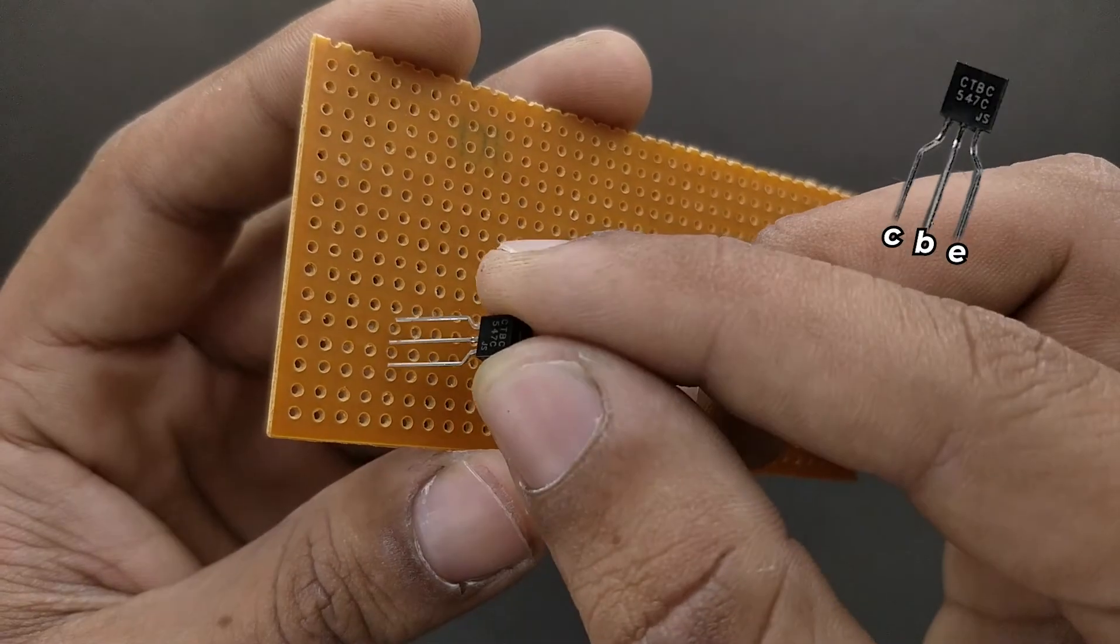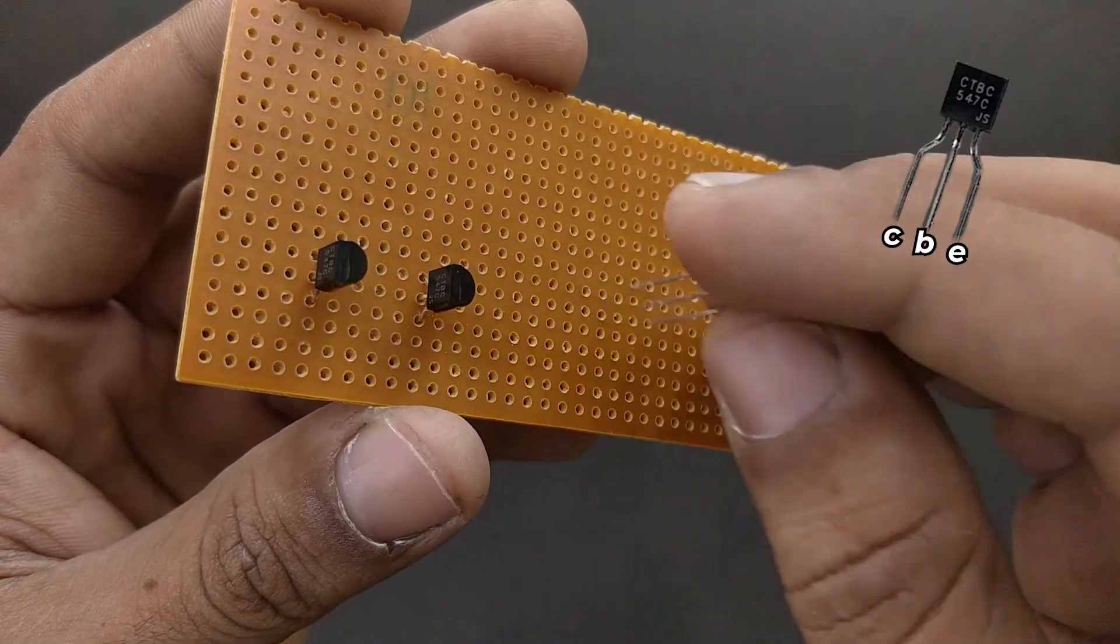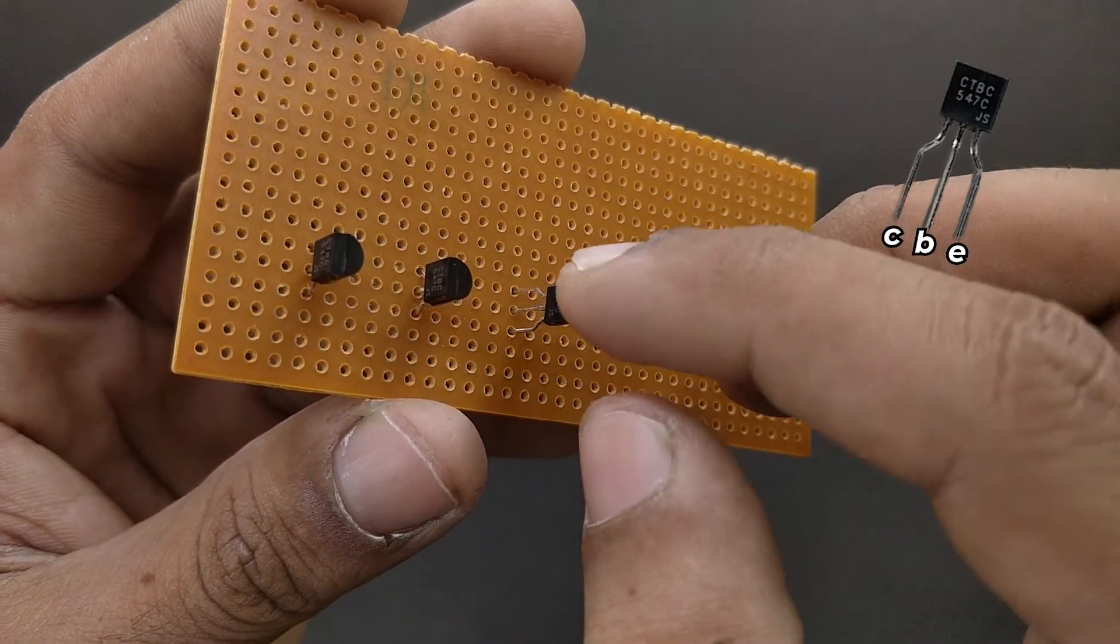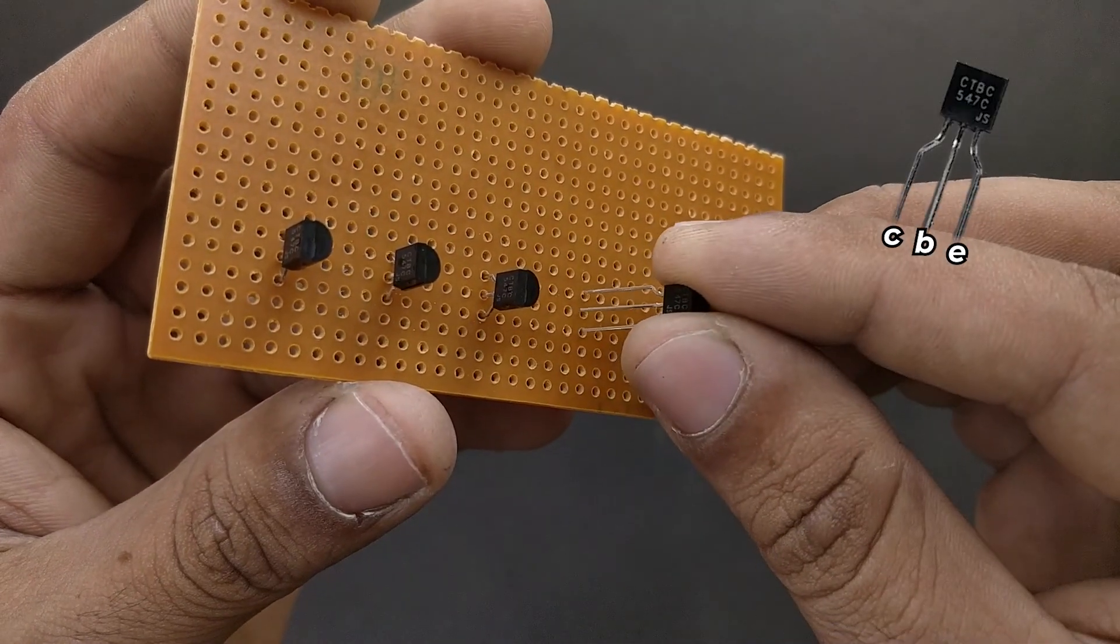Now arrange the transistors on the zero PCB in such a way that the emitter comes on the left and the collector comes on the right like you see in the video, and solder all four of them in place.